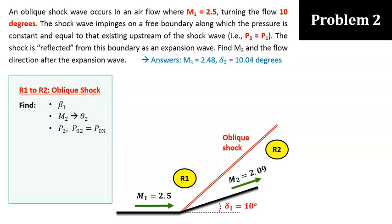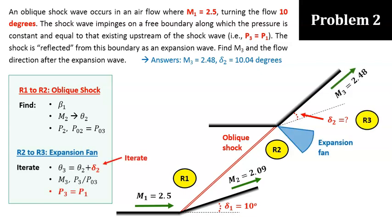Then, the oblique shock hits a boundary that causes the flow to deflect again. But this time, the deflection causes the pressure to reduce back to P1, as stated by the question. For the flow to decompress back to P1, it has to go through an expansion fan. This means that the deflection is an outward deflection, but with an unknown angle, delta 2.